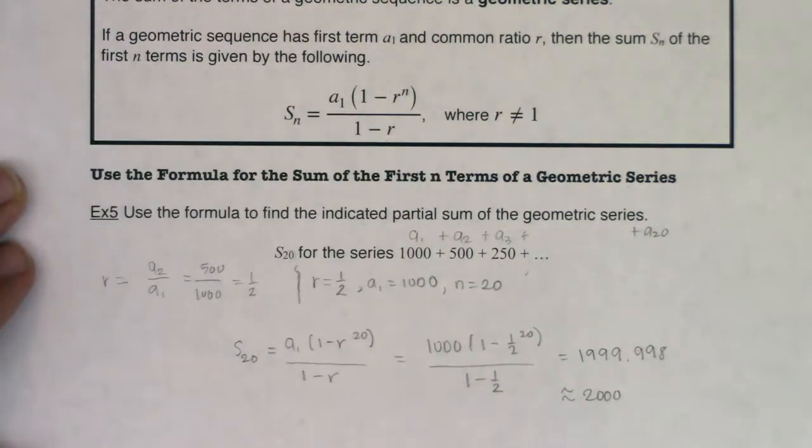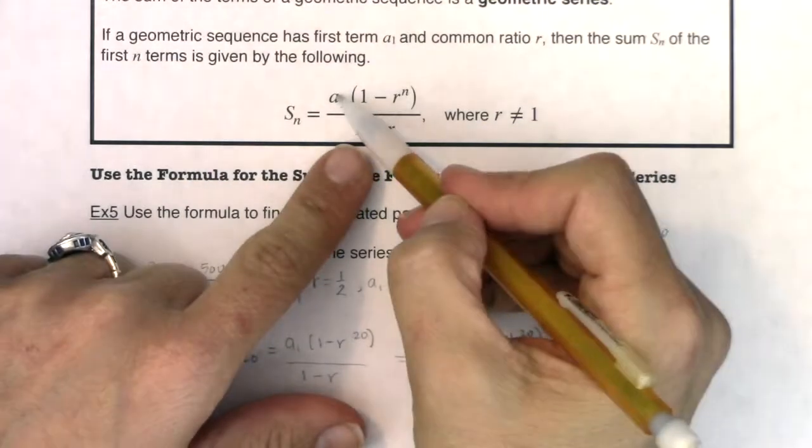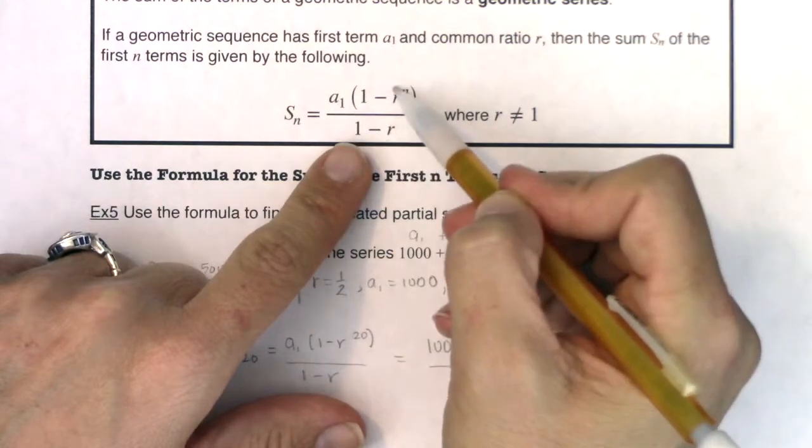All right. So we've got our first look at a finite geometric series. We've got our formula that's governing us. Keep in mind a sub 1, starting number, your initial value, r, your common ratio, n, the number of terms you want to add,